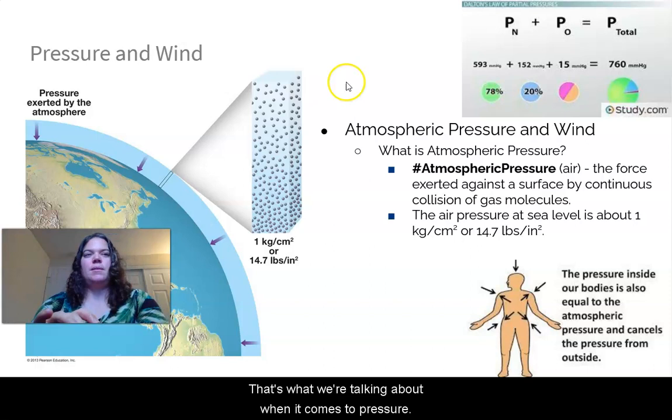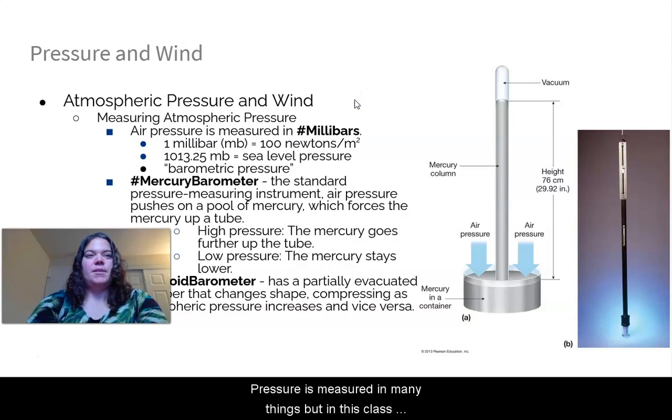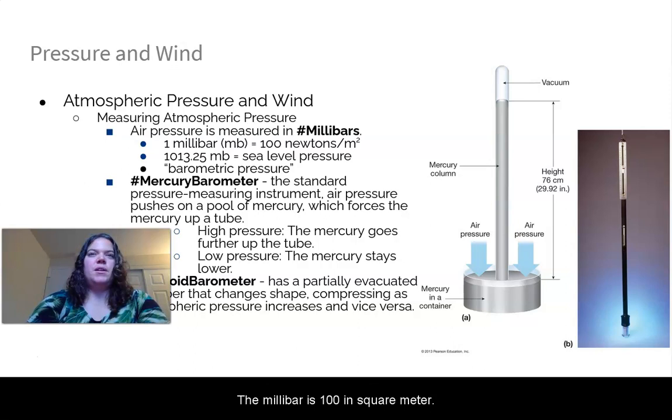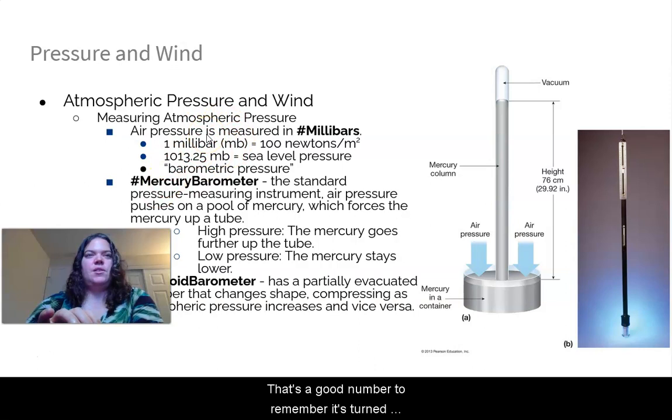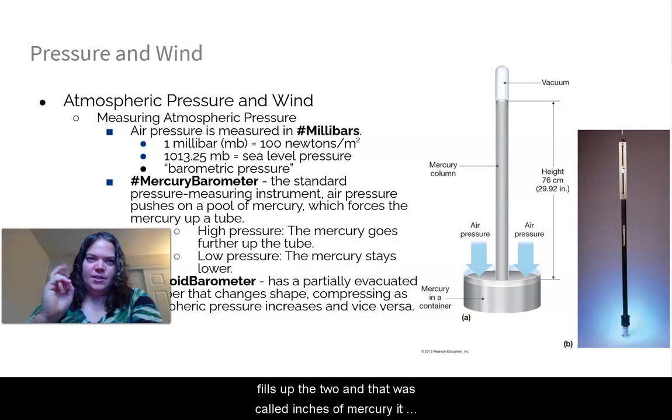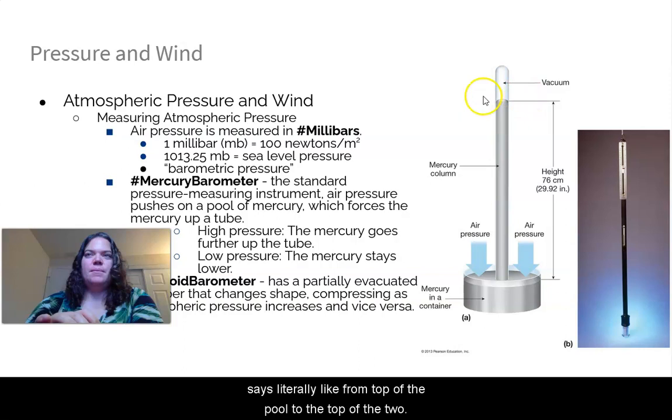So how do I measure it? Pressure is measured in many things, but in this class we will focus on millibars. So a millibar is 100 newton per square meter. For millibars, the average sea level pressure in the United States is 1013.25 millibars. That's a good number to remember. It's termed barometric pressure because of this thing - a mercury barometer. It is a standard pressure measuring instrument. So the air pressure pushes down on this pool of mercury in a container, which then forces it to go up this tube, which has a vacuum at the top. As it pushes more, we get a higher pressure, and it further fills up the tube. That was called inches of mercury. And then as there's lower pressure, the mercury then drops back into the pool, so it stays lower.